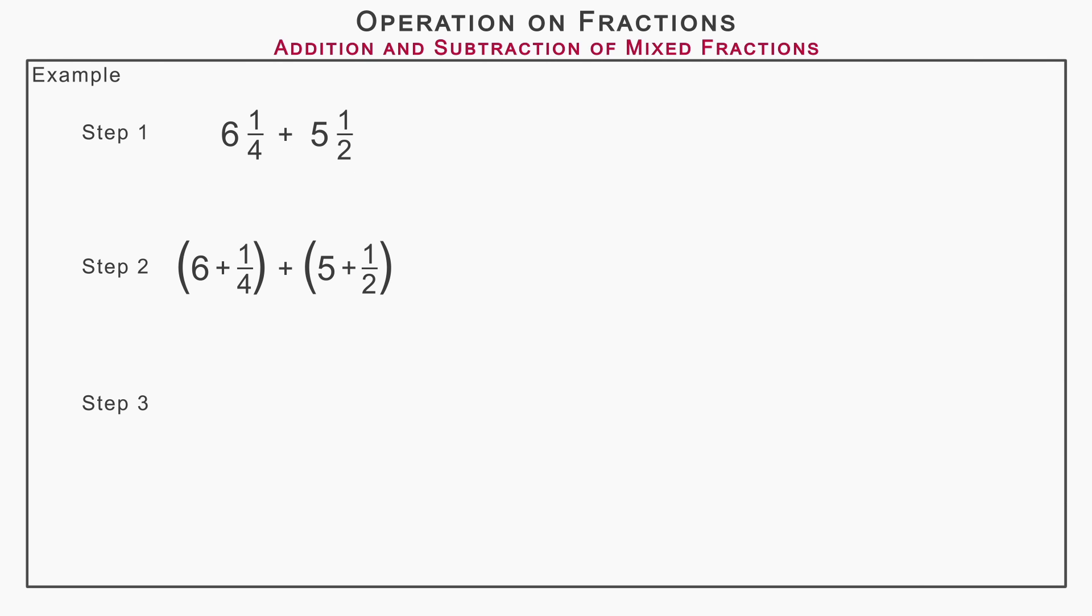Now in step 3, open the brackets using the sign rules of multiplication as learned in addition and subtraction of integers. So we get 6 plus 1 upon 4 plus 5 plus 1 upon 2.